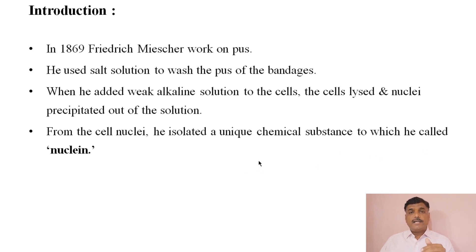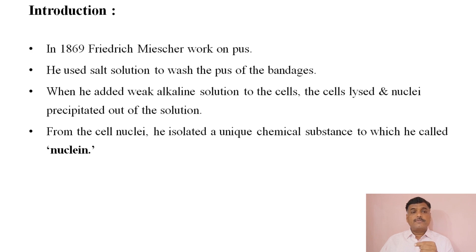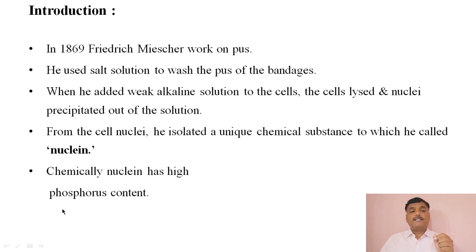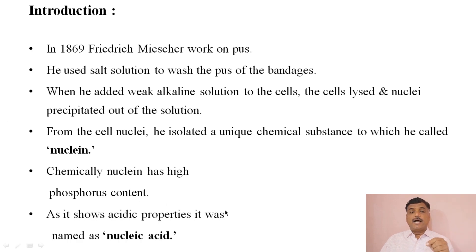The nuclein, found in the cell nucleus, is a chemical substance that has a high phosphorus content. As it showed acidic properties, it was later renamed nucleic acid.